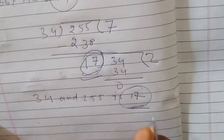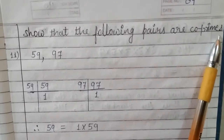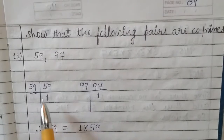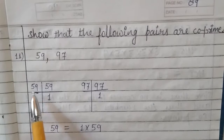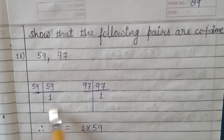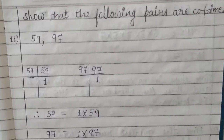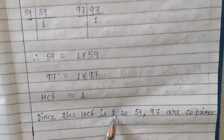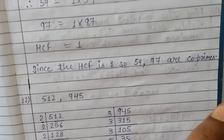Now come to the next question: show that the following pairs are co-prime। हमें बताना है कि यह pair co-prime है या नहीं। पहले HCF निकालेंगे — 59 एक prime number है, 97 भी prime number है, इनका HCF 1 है। There is no common factor except one। Since the HCF of 59 & 97 is 1, they are co-prime।